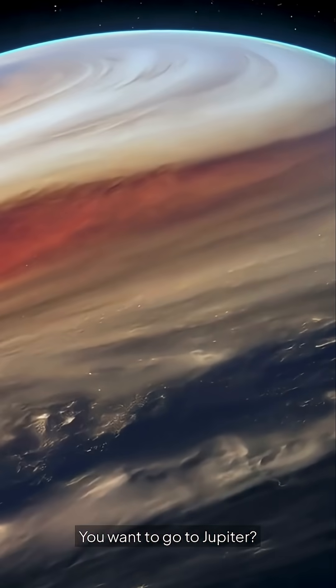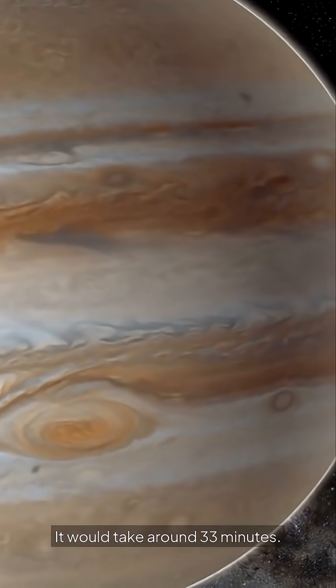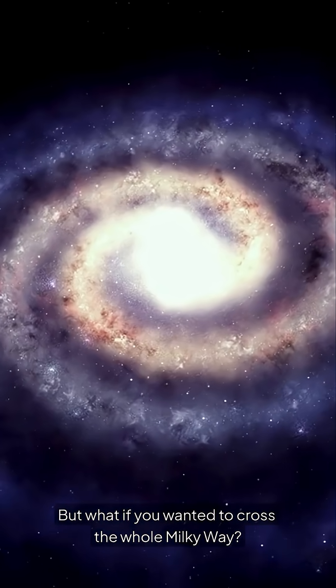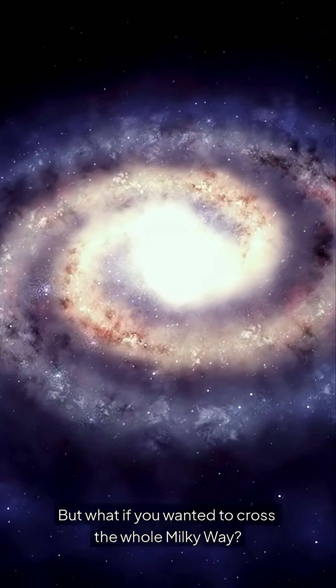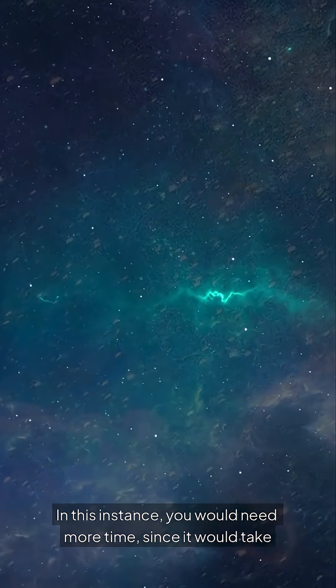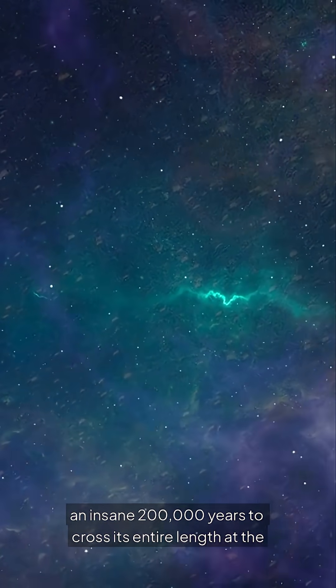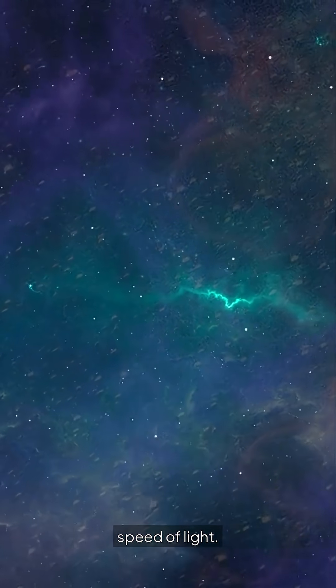You want to go to Jupiter? It would take around 33 minutes. But what if you wanted to cross the whole Milky Way? In this instance, you would need more time, since it would take an insane 200,000 years to cross its entire length at the speed of light.